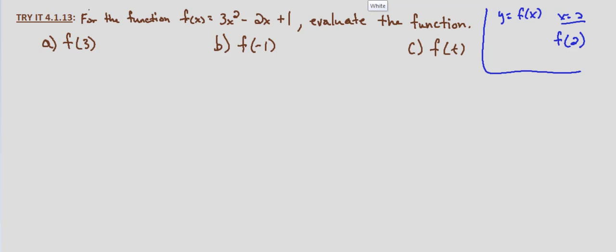So for this first one, I'll show you what I mean by it's more of the same. We have f of x equals 3x squared minus 2x plus 1, we're asked to find f of 3. This is the same thing as being given y equals 3x squared minus 2x plus 1, and being asked to evaluate it at x equals 3.